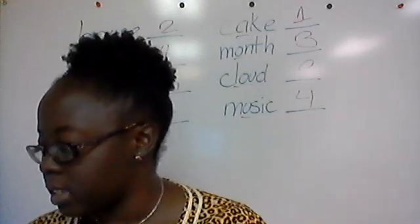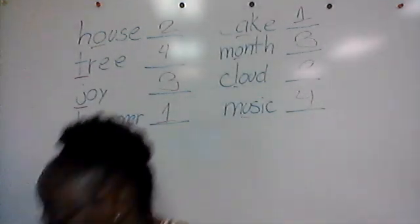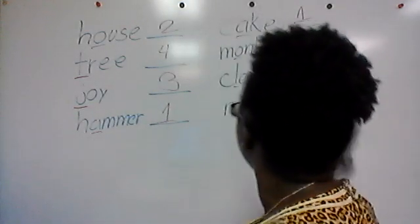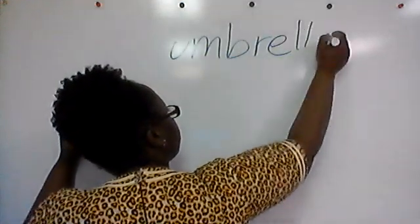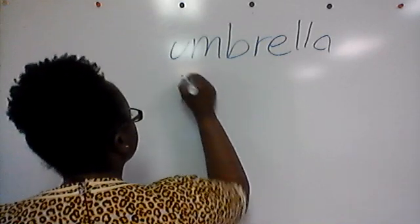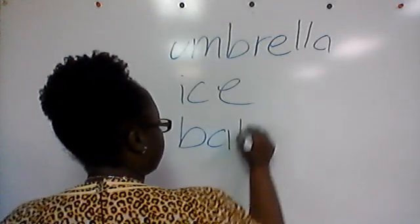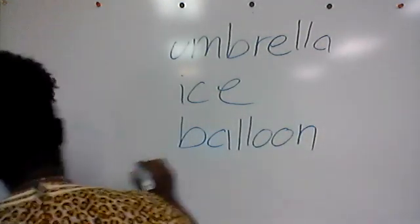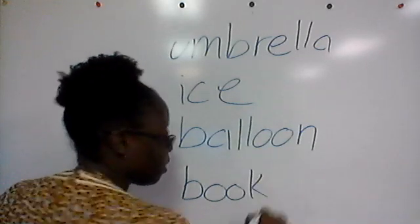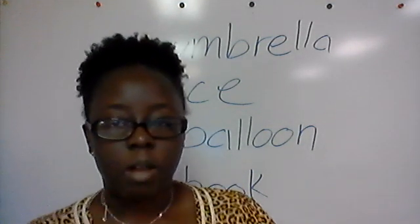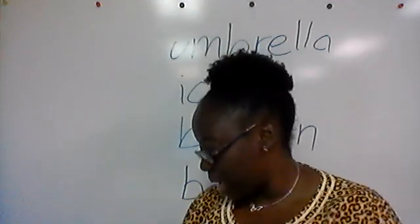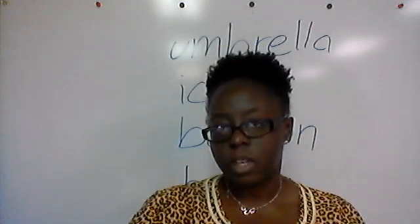Umbrella. The next word is ice. The next word is balloon. And I'm going to go ahead and put them on the board so you can see the spelling. The last word is book. So I have: umbrella, ice, balloon, moon, and book. These are the words you guys are going to be listing in ABC order. Write them down, list them in ABC order, take a picture, and have mom and dad send it to Mrs. Spadano or post it on RedWeb. You get something for participating, but a little extra something for getting all the answers right.